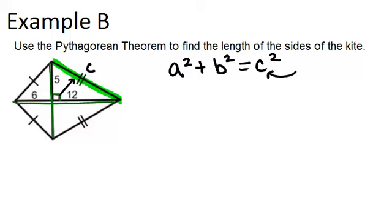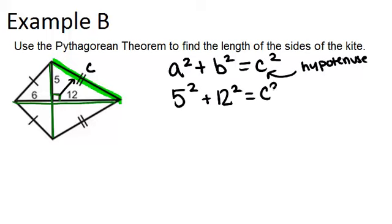where C is always the hypotenuse. So to find C in this case, we're going to do 5 squared plus 12 squared equals C squared. That means 25 plus 144 equals C squared.